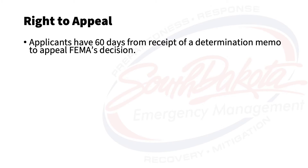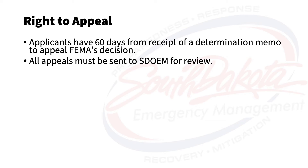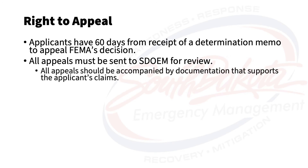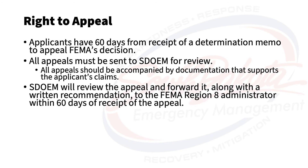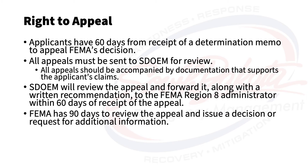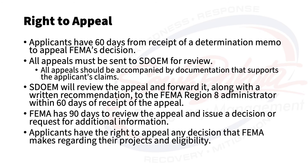Applicants have 60 days from the receipt of a Determination Memo to appeal FEMA's decision. Applicants must send their appeal to SDOEM for review. All appeals should be accompanied by documentation that supports the applicant's claims and has not previously been submitted to FEMA. SDOEM will review the appeal and forward it along with their written recommendation to the FEMA Region 8 Administrator within 60 days of receipt. FEMA has 90 days to review the appeal and issue a decision or request for additional information. Applicants have the right to appeal any decision that FEMA makes regarding their projects and eligibility.